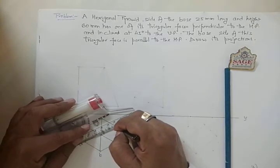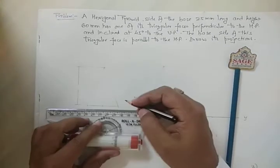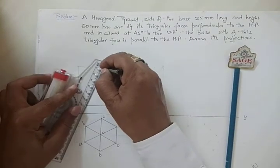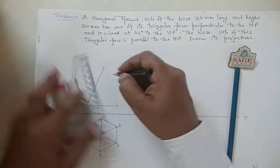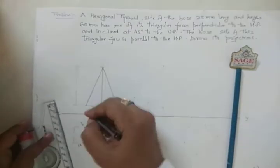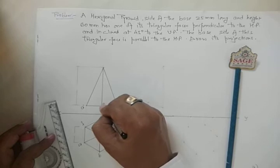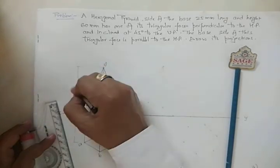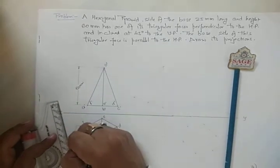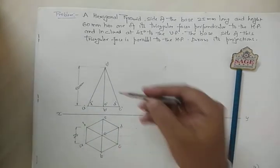The top view is now completed. With the help of this, draw perpendicular projectors. The front view will be a triangle. The points will be A', B', C', D', E', F', and O'. The base side will be 25 mm — this is the initial position.